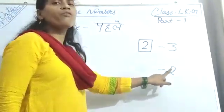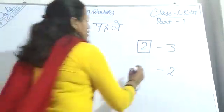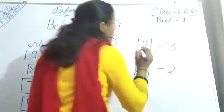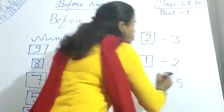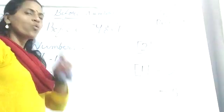Next. What comes before 2? 2 se pehle kya aata hai? 1. So write in box. 1. Okay. Next. What comes before 5? 5 se pehle kya aata hai? 4.